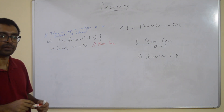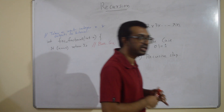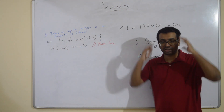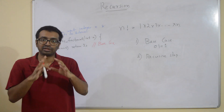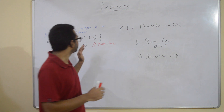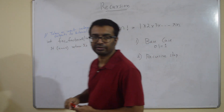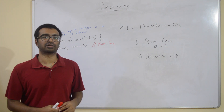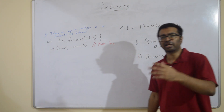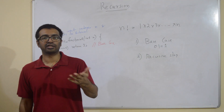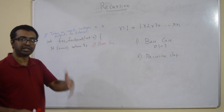Now for the recursive step: the idea behind recursive thinking is — if I know the solution to a simpler instance of the same problem, can I answer the current problem? If I know the factorial for a smaller number, can I compute factorial for n? Clearly, if I know factorial(n-1), I can compute factorial(n) because n! = n × (n-1)!.